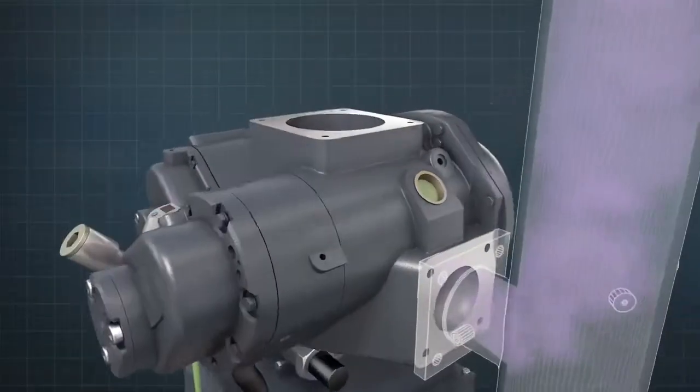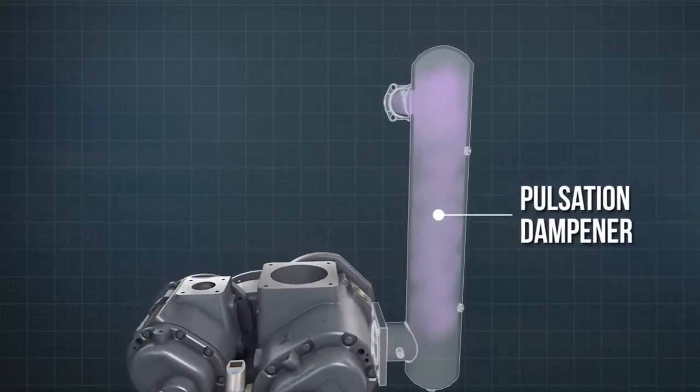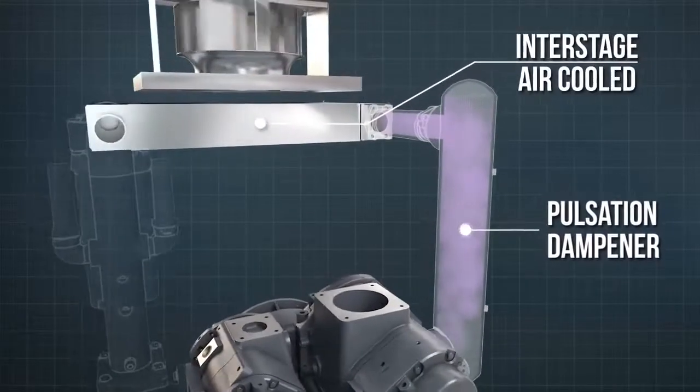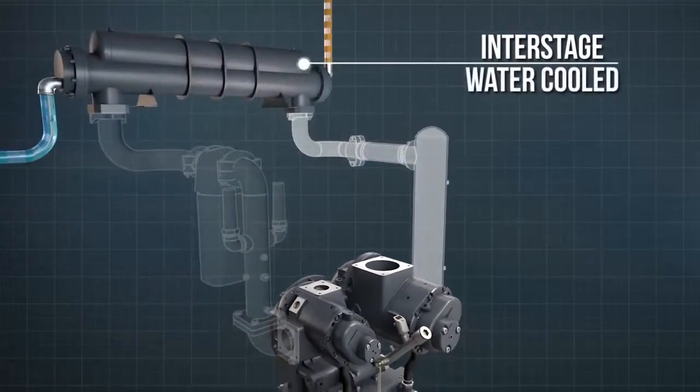After leaving the first stage, the compressed air passes through a pulsation damper, then onto a first-stage or inter-stage cooler. This can either be air or water-cooled, depending on the model of compressor.